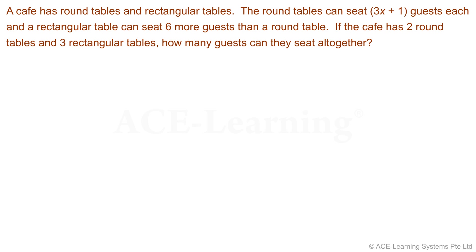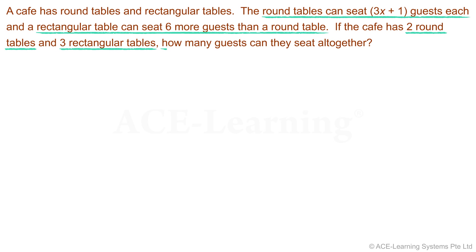A cafe has round tables and rectangular tables. The round tables can seat 3x plus 1 guests each, and a rectangular table can seat 6 more guests than a round table. If the cafe has 2 round tables and 3 rectangular tables, how many guests can they seat altogether? Let us try to visualize the problem by drawing a diagram.